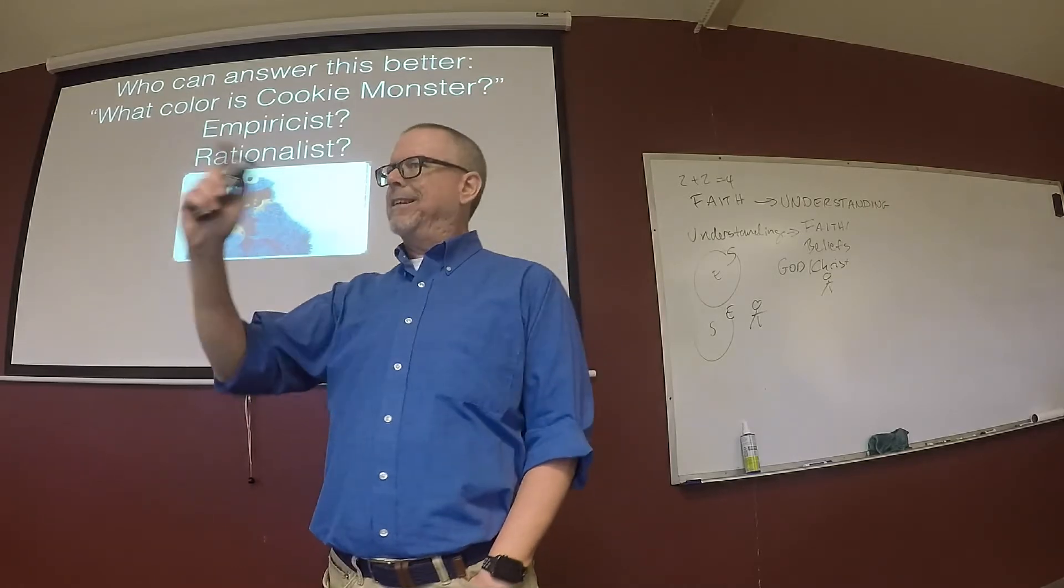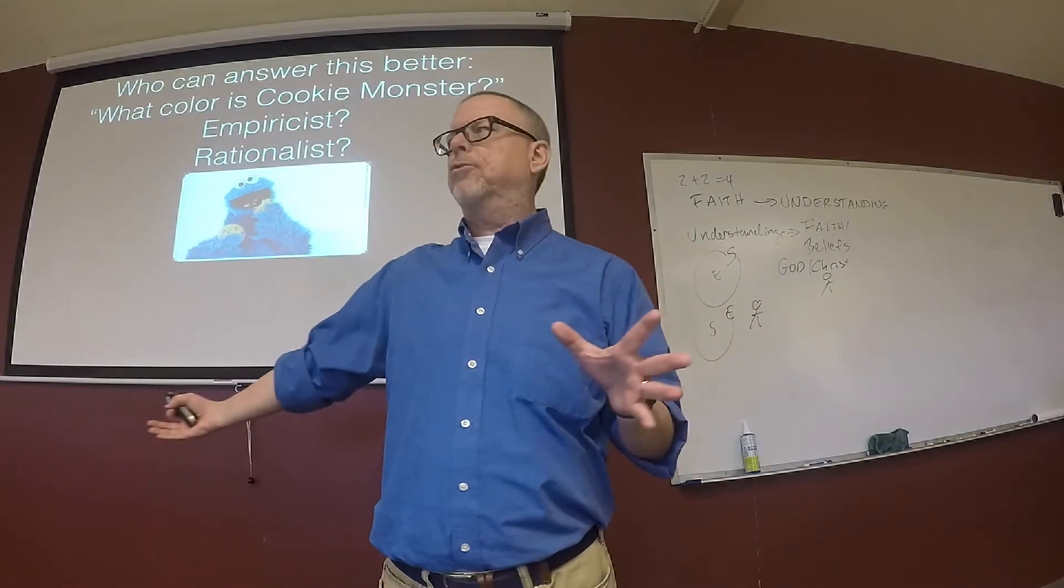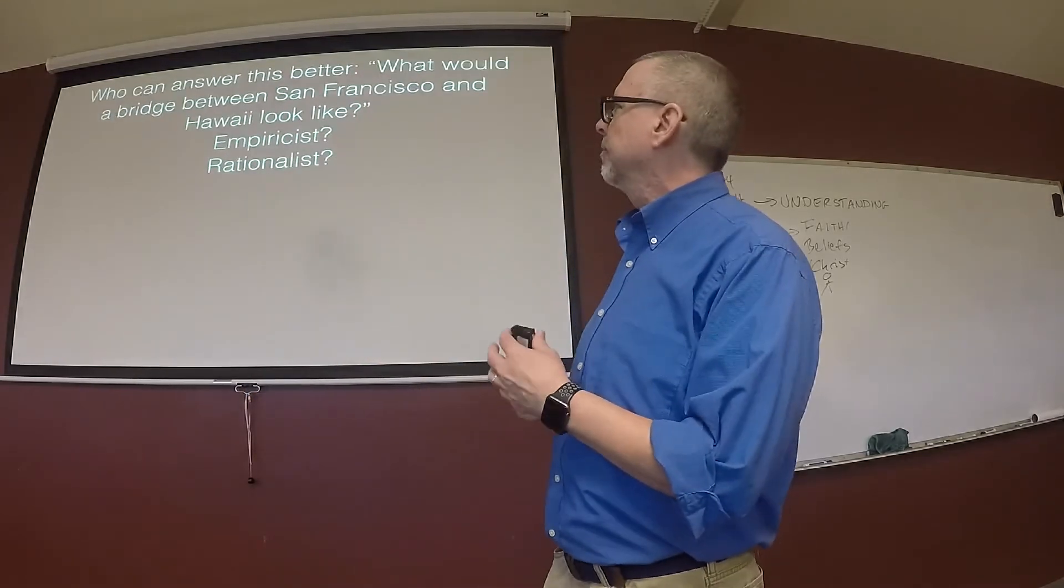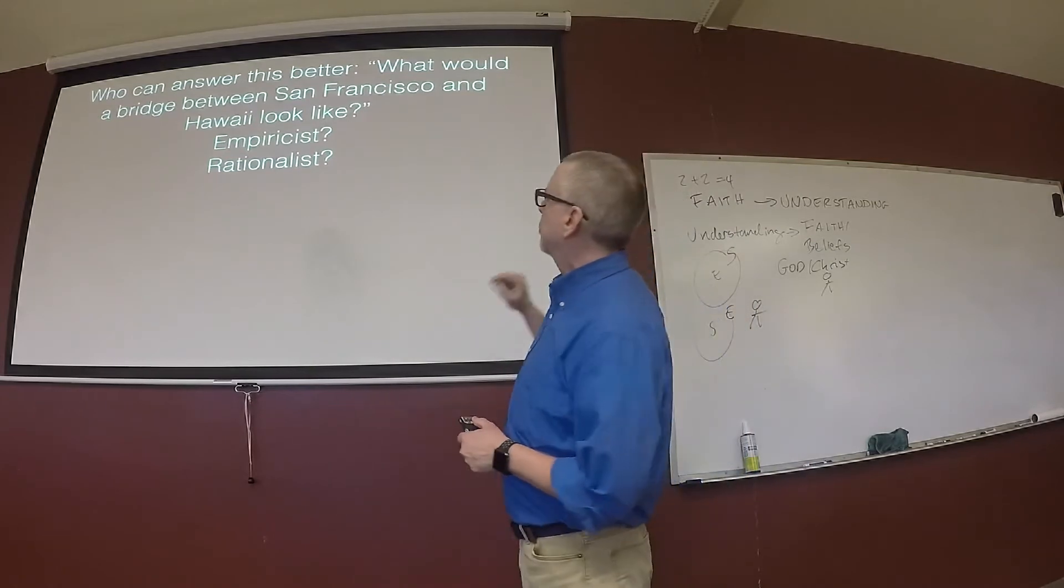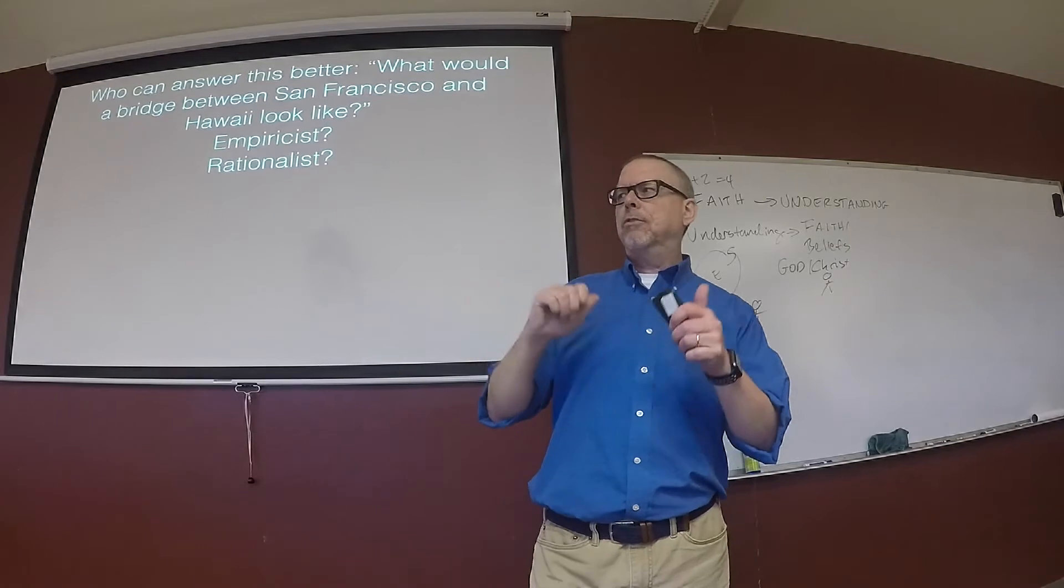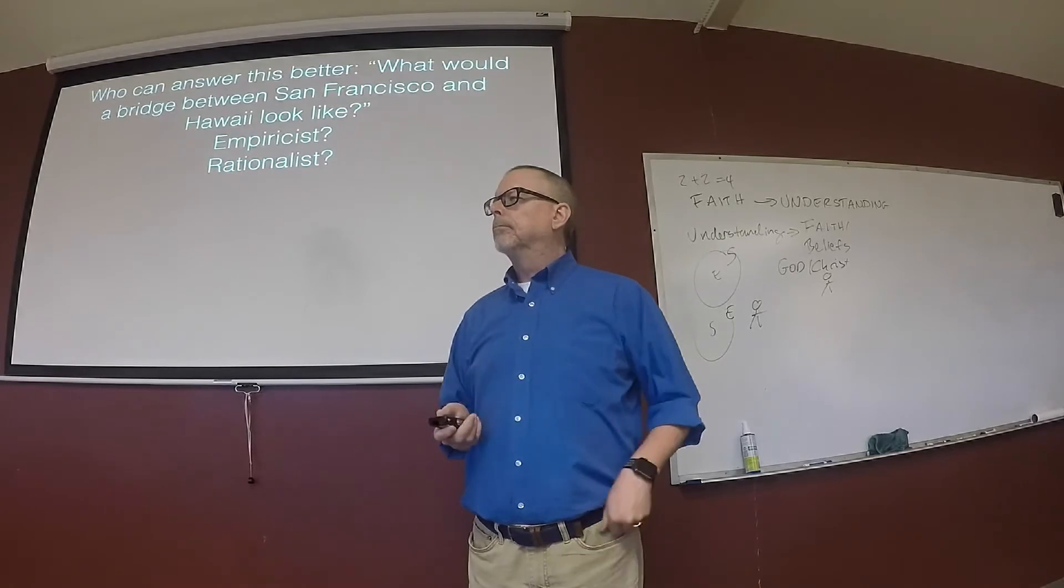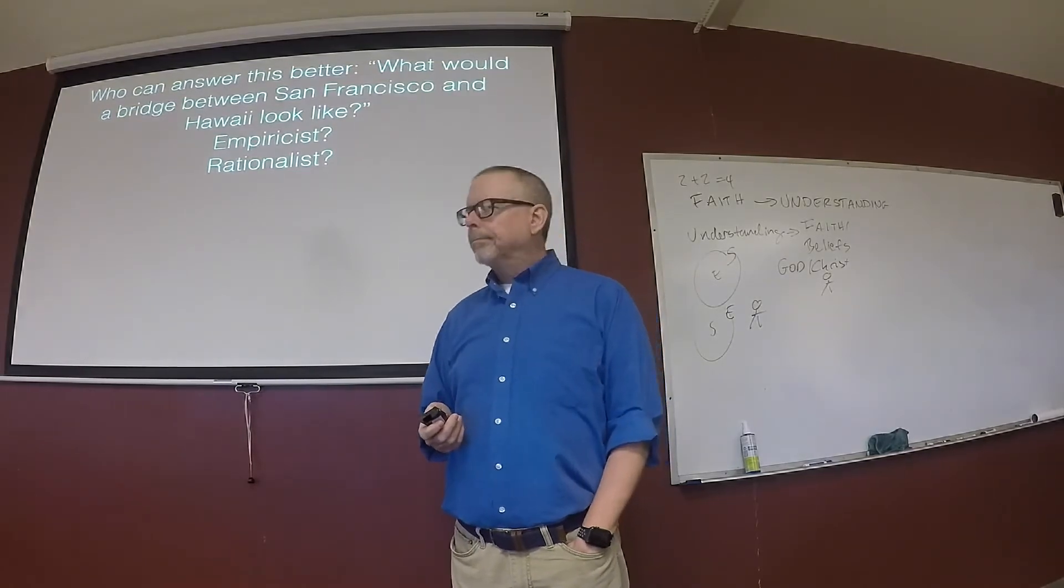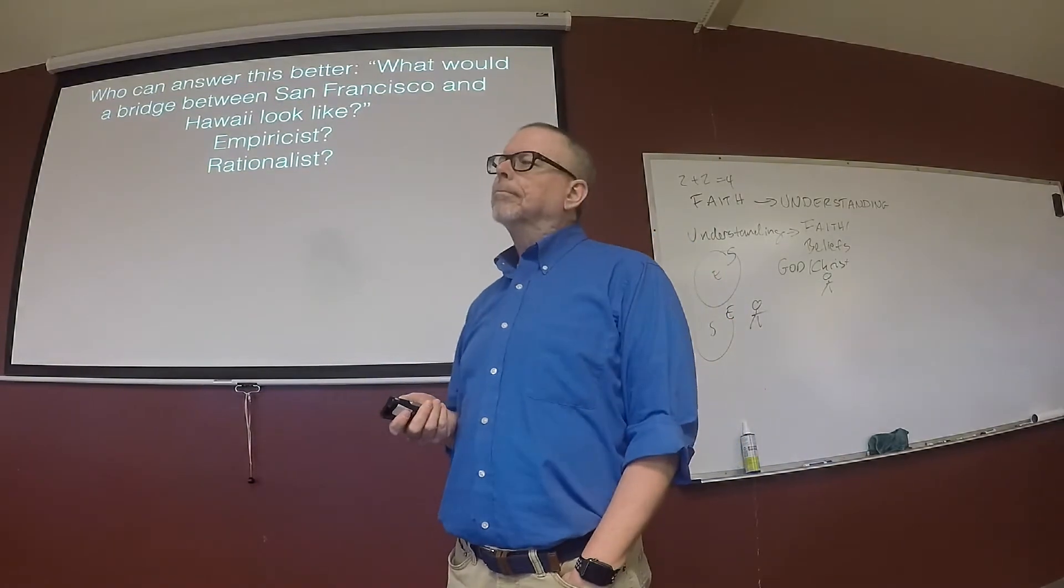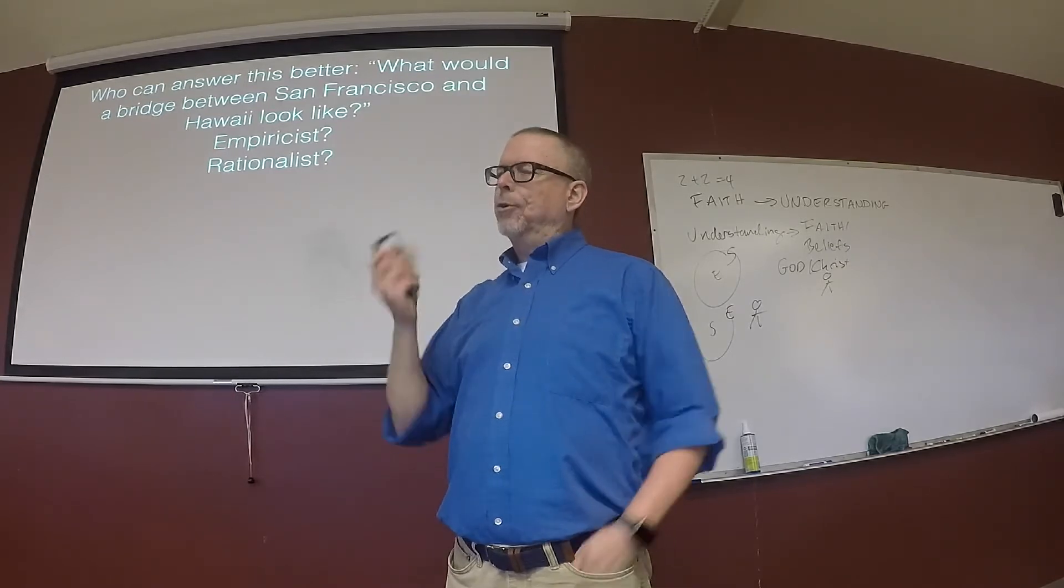So it could be that all Cookie Monsters are blue, but there's nothing in that definition that says he has to be. So that would probably be like a synthetic statement that Cookie Monster is blue. And maybe once I've seen every single Cookie Monster in the world and they're all blue, then I can, but it would still be an empiricist type idea here. Who can answer this better? What would a bridge between San Francisco and Hawaii look like? Would a rationalist or an empiricist? Why do you think a rationalist, Mr. Schoen? Because there isn't a bridge between San Francisco and Hawaii. But you can use logic as well. There's a big gap. So therefore, the bridge has got to be really big, really long, and you need to have a bunch of support structures that are probably similar. Yeah.